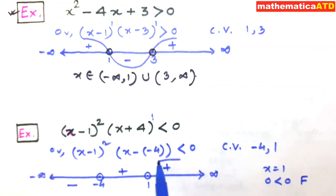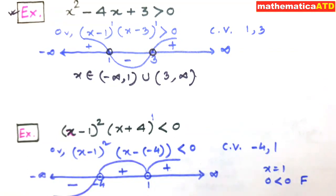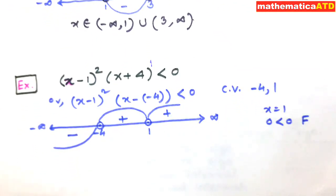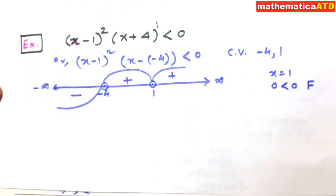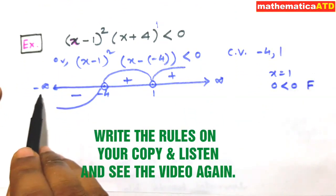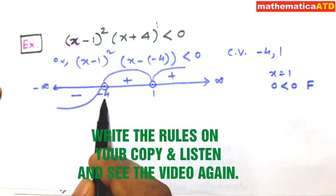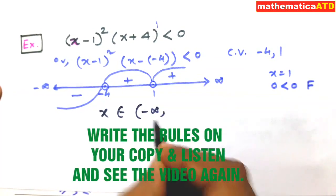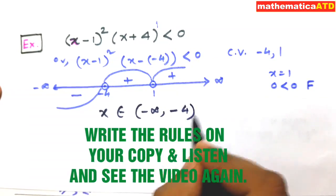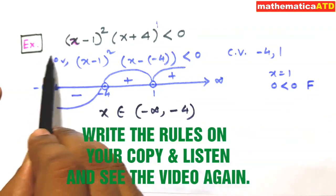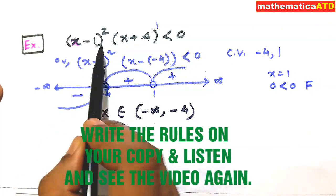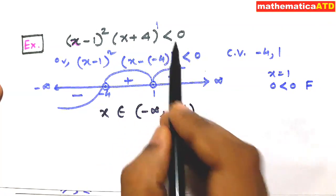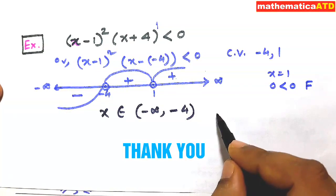So the wavy curve shows a positive region from 1 to infinity and a negative region from minus infinity to minus 4. Since the inequality sign is less than, we take only the negative parts. Therefore, x belongs to (negative infinity, negative 4), which is the solution of the second example: (x - 1)² · (x + 4) < 0. Thank you. Have a nice day.